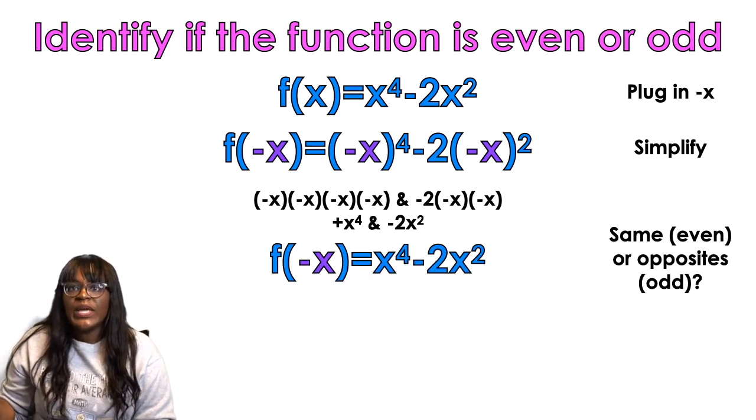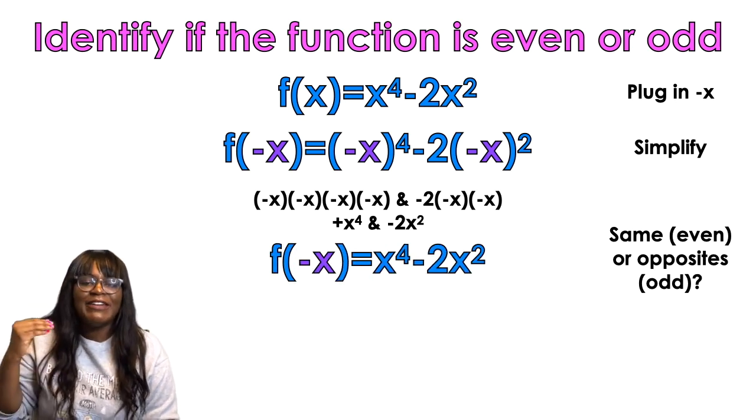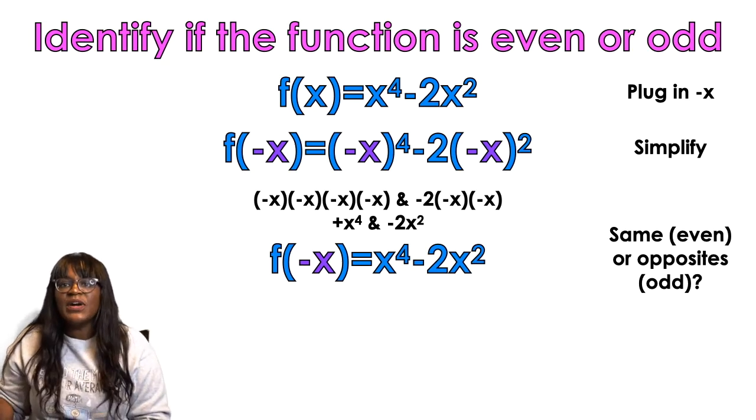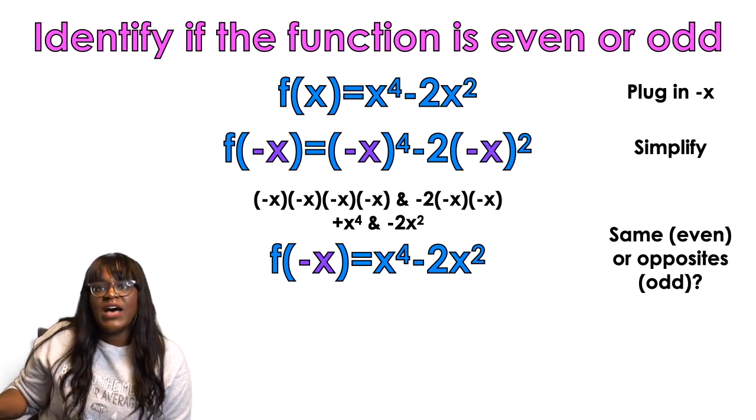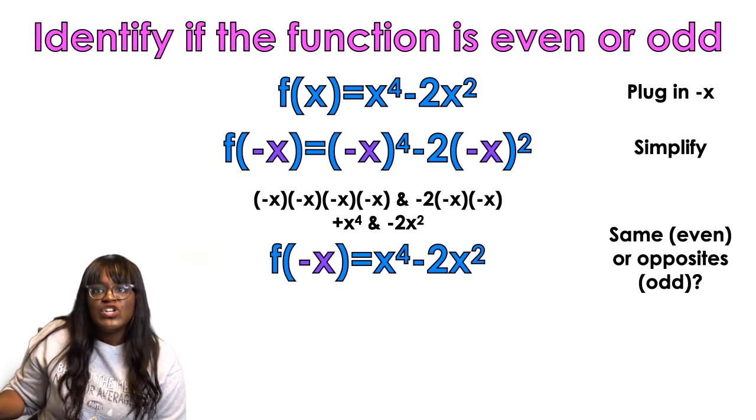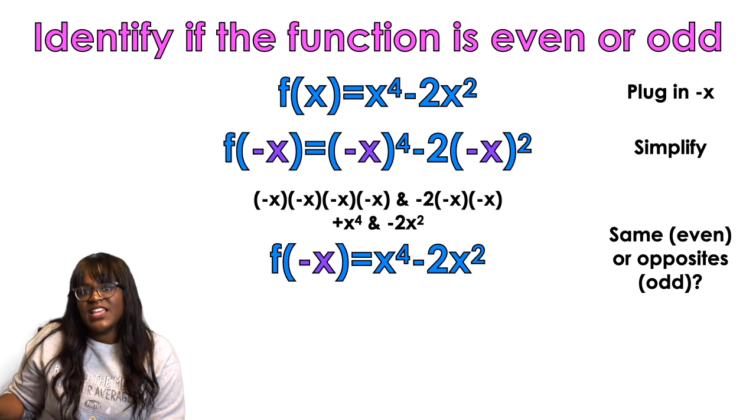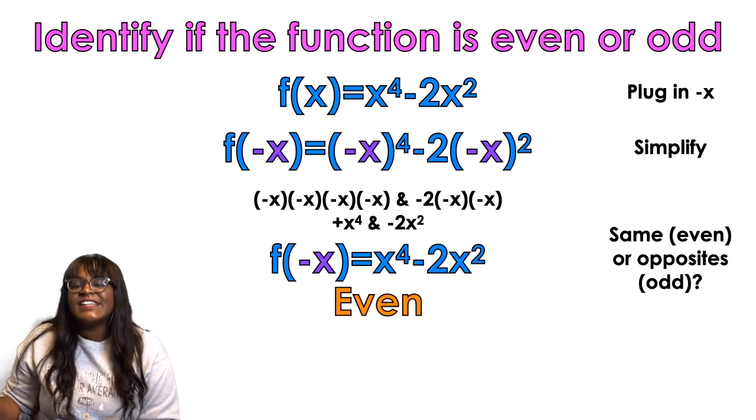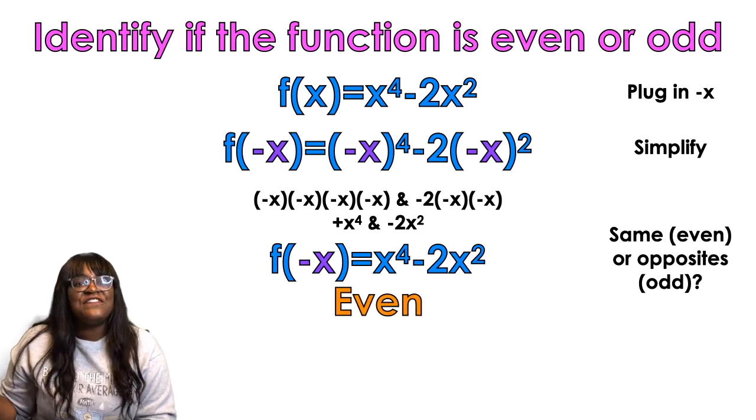Three negatives is going to come out negative. So what we're noticing is that the positive x to the fourth stayed positive. The negative 2x squared stayed negative. So if the things stay the same, it's even. So this is an even function.